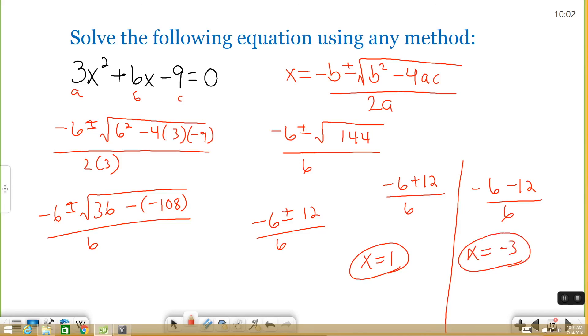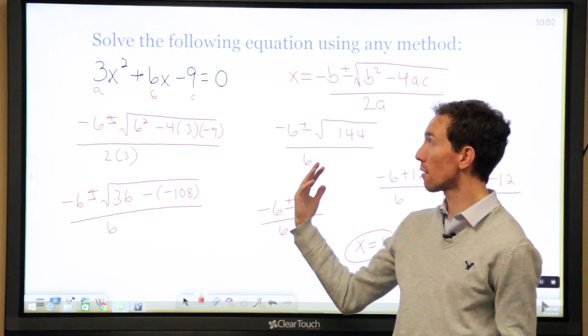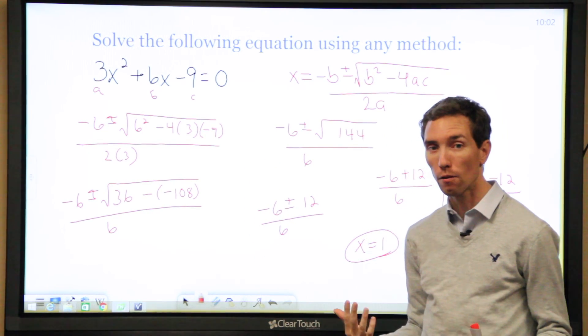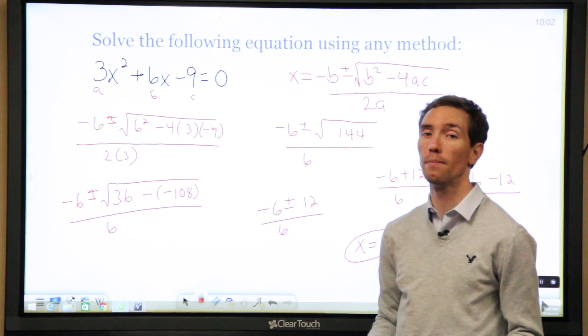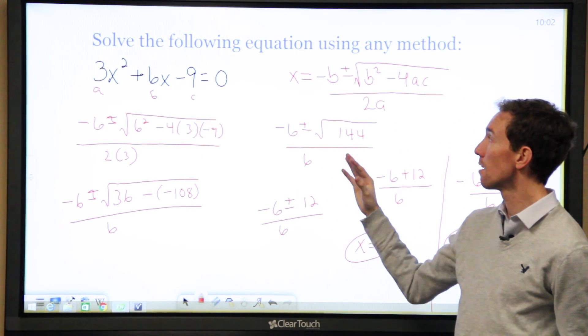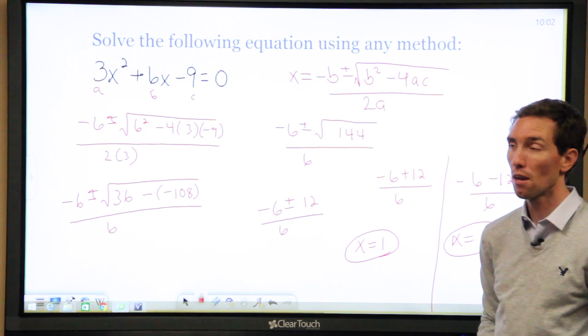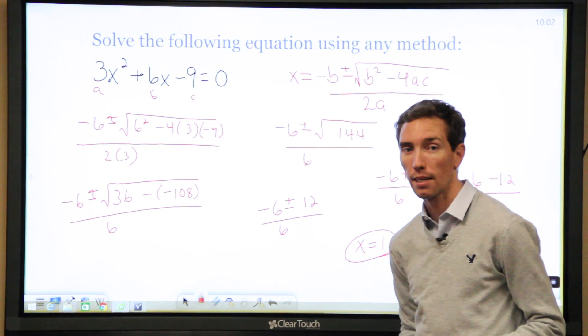So when you get to a quadratic equation, one that has the highest exponent of 2, the highest exponent of 2 actually tells you that you should have two answers. So when you get to problems like this, there is a formula for it. It's on the reference sheet. I highly recommend using it. There are other ways to solve this, but I think in many cases, using the quadratic formula is the easier of them.